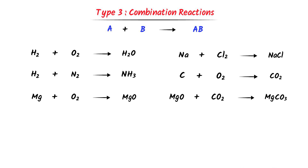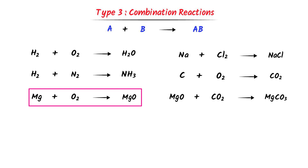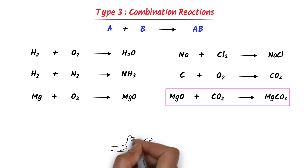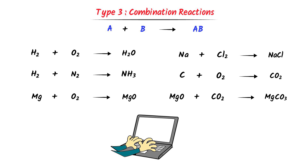We learn the products of some important reactions, like the formation of oxides — when magnesium plus oxygen react together, they form an oxide. Secondly, we learn the formation of carbonates, like magnesium carbonate. Note down all these important examples.